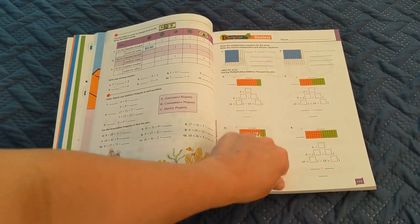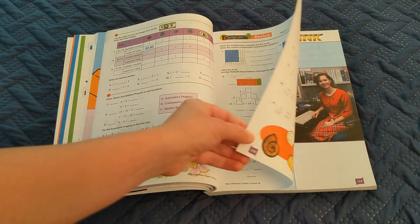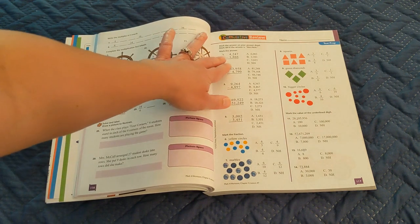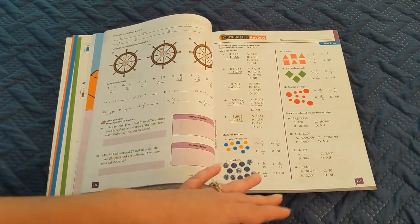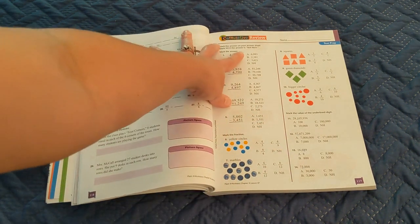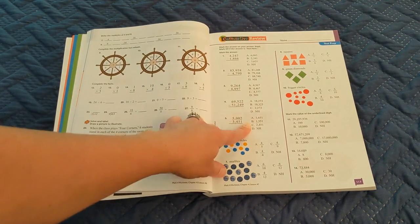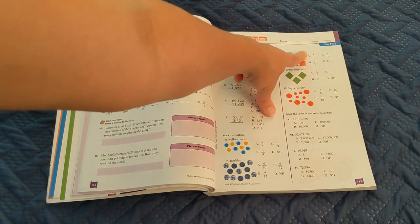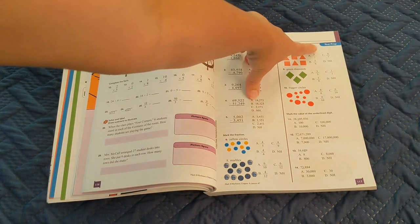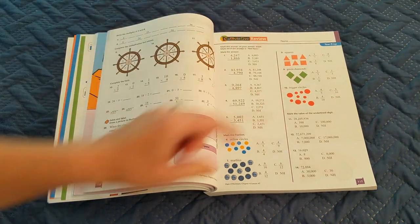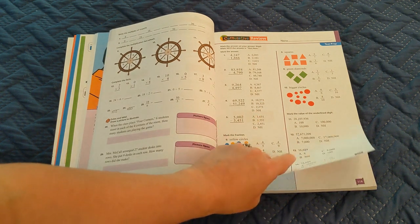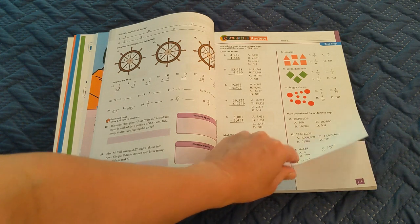Once you get to the end of the chapter, there is a chapter review, and then there is a separate test packet that you could also take a test on this chapter. And then they also have the cumulative review that brings in information from previous grades and from previous chapters in this book. The one thing I like about the cumulative review is it gets them started with practice if you choose to give your student standardized tests. It gives that multiple choice answer format. They even indicate that this is test prep up there in the corner.